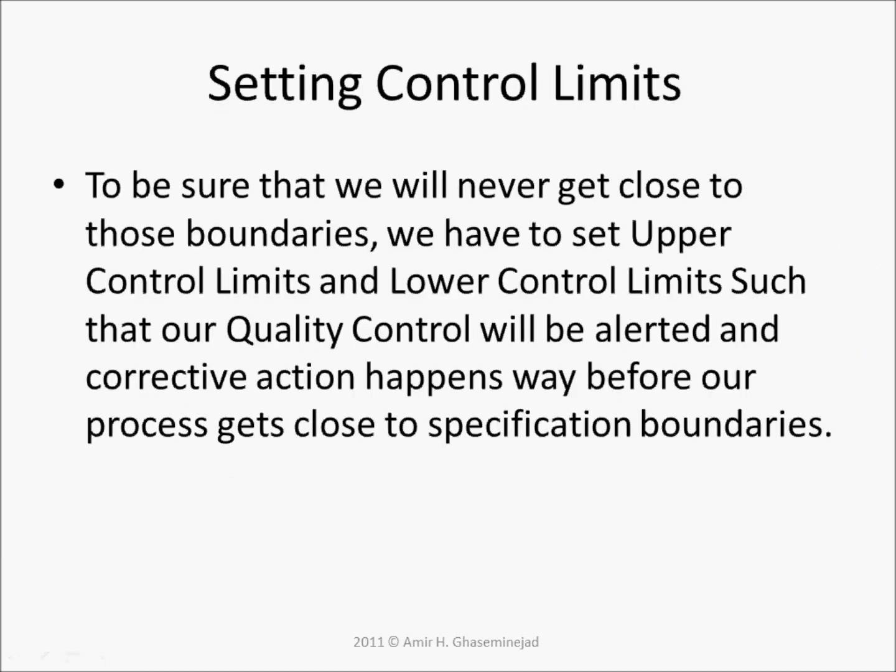Now the question is: where should we set our control limits? To be sure that we will never get close to those boundaries, we have to set upper and lower control limits such that our quality control will be alerted and corrective action happens well before our process gets close to the specification boundaries.